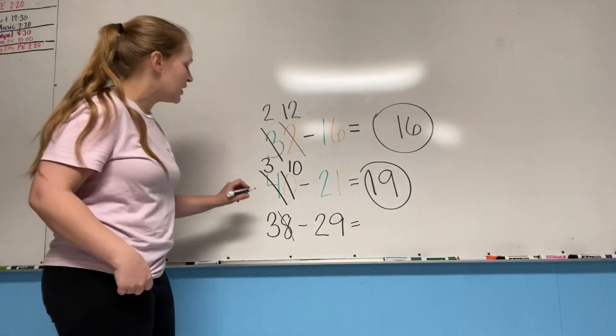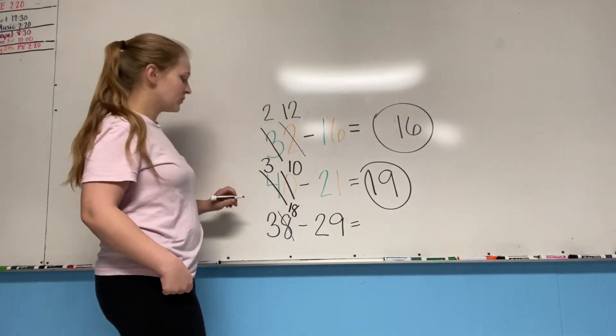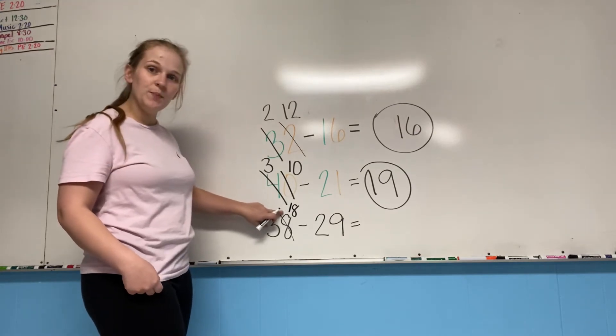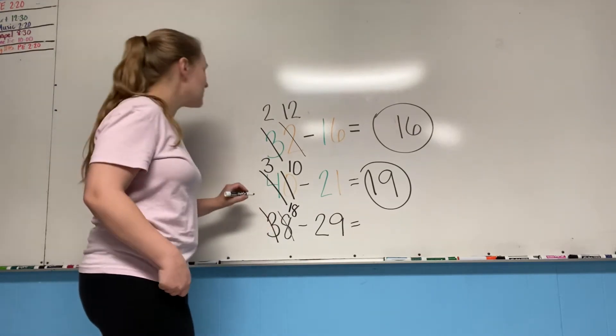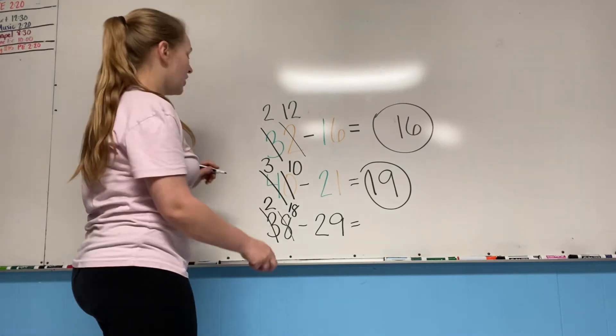So our eight becomes an 18. And where did we get this one from? We got it from the three. So the three becomes a two. Very good.